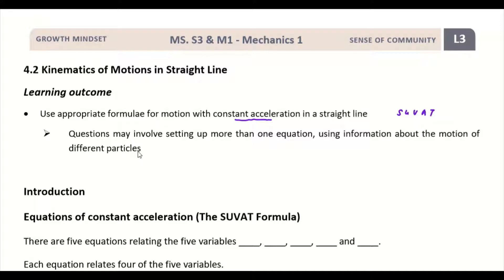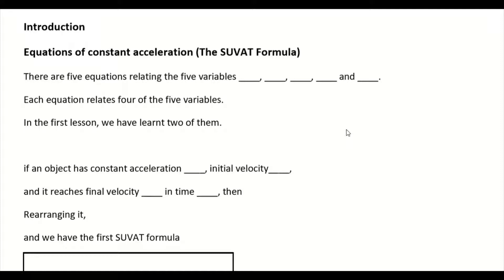Let's start with the introduction to the equations of constant acceleration — the SUVAT formulas. We will look at five equations relating five variables: s, u, v, a, and t. S stands for how far the particle moves, u is how fast the particle moves at the beginning, v is how fast at the end, a is the rate of change of velocity, and t is the duration. Each equation relates four of the five variables.